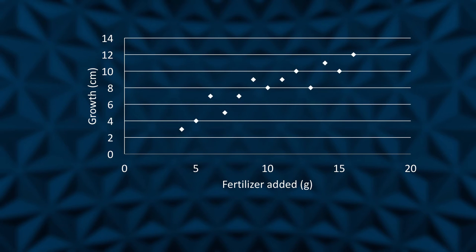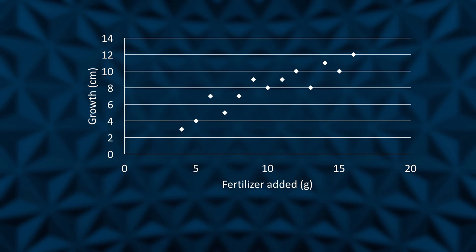With a scatter plot, a mark — usually a dot, a cross, or a small circle — represents a single data point. With one for every data point, a visual distribution of the data can be seen. Depending on how tightly the points cluster together, you may be able to discern a clear trend in the data.